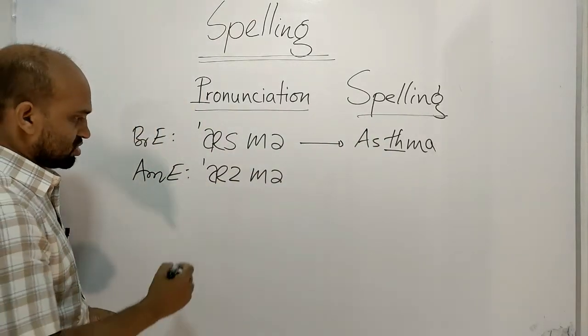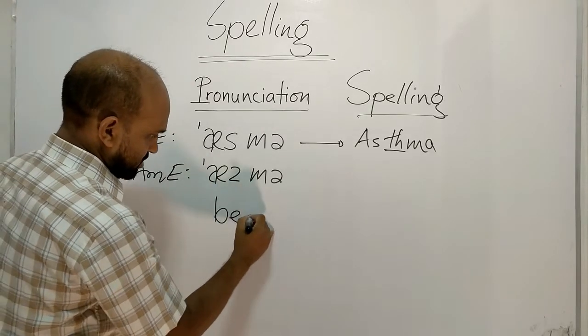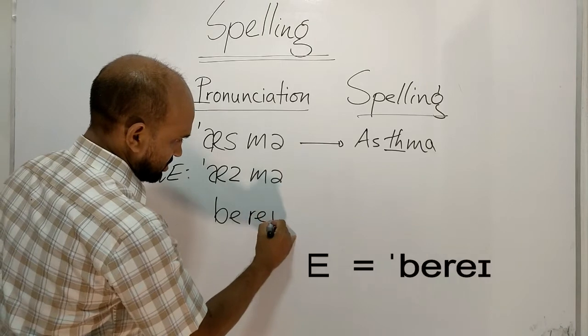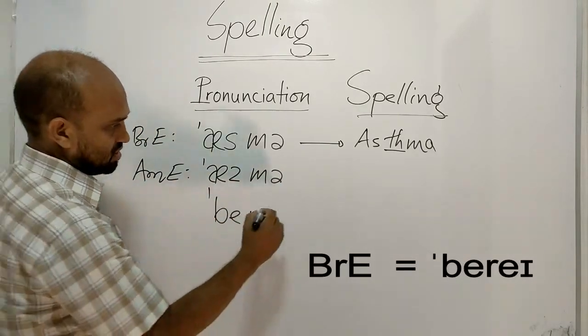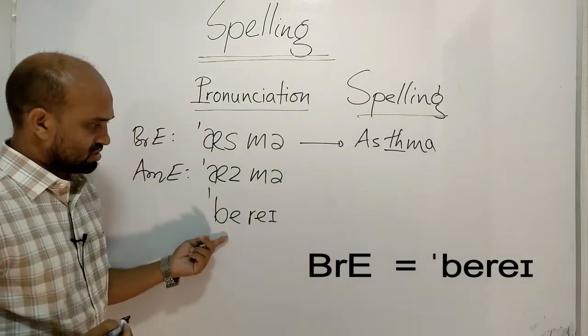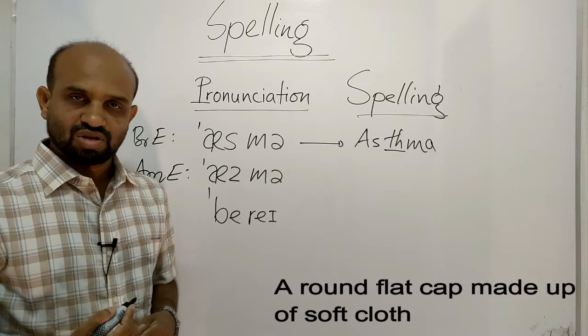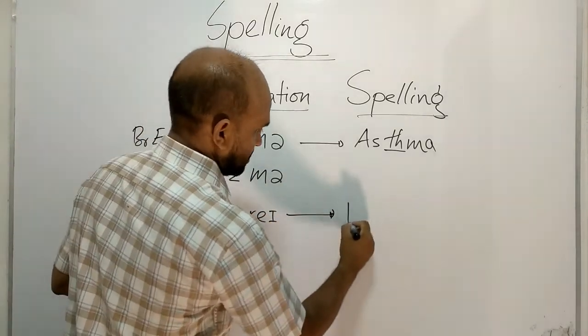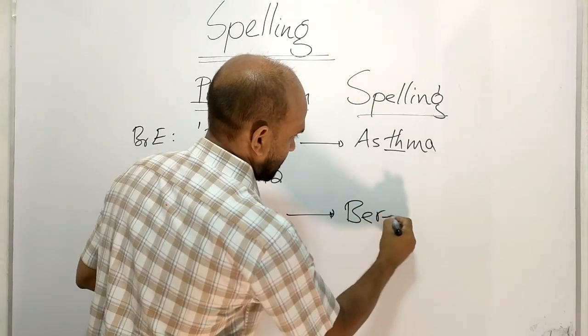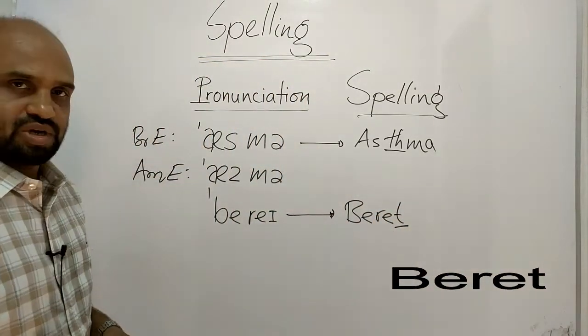The pronunciation of the next word is beret. The meaning of this word is a round flat cap with soft cloth. The spelling is B-E-R-E-T. Here this T remains silent.